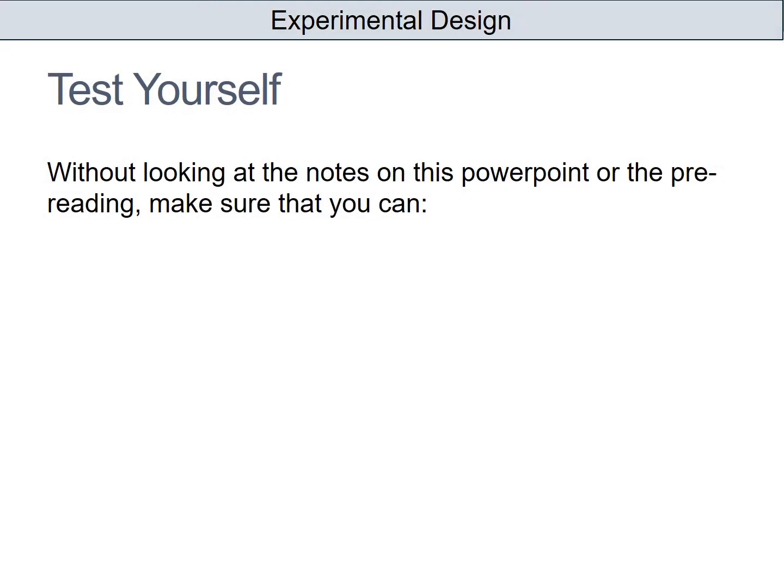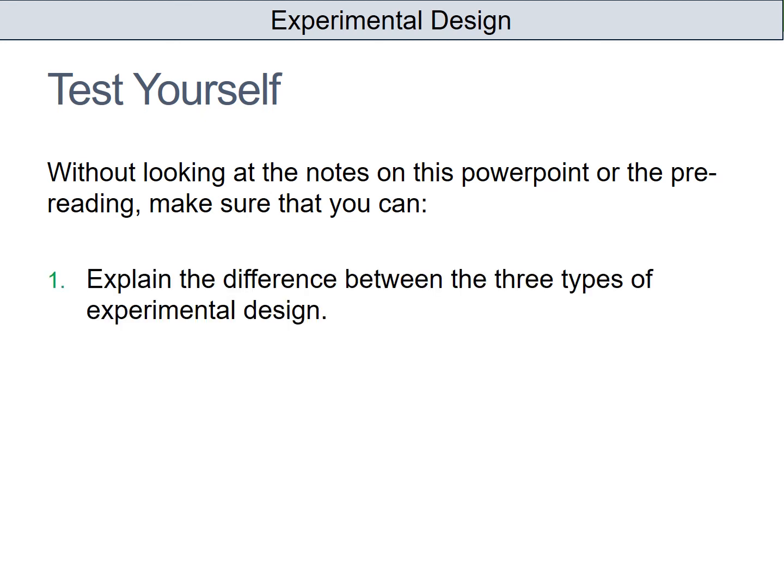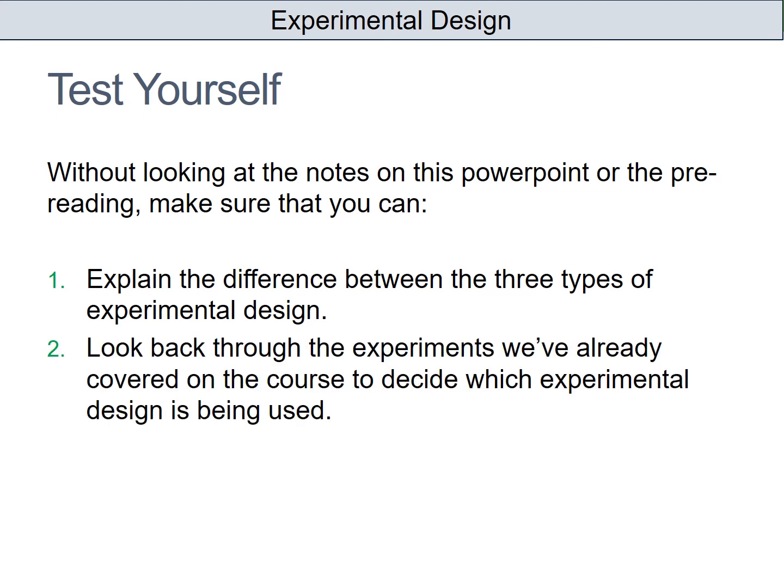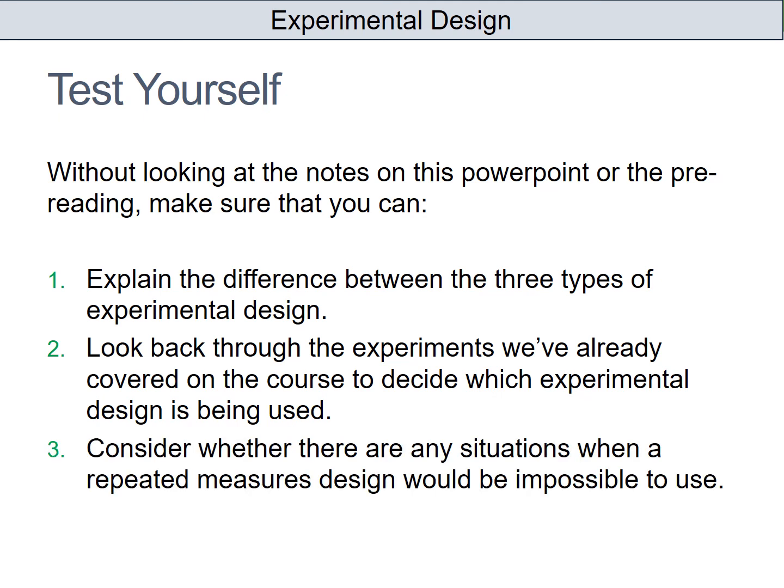Have a look at the pre-reading to get more information about experimental design, but before you come into the lesson make sure you can do the following: firstly, explain the difference between the three types of experimental design; secondly, look back through the experiments already covered — mostly in memory but some within the approaches — and decide whether they use independent groups, repeated measures, or matched pairs design; and thirdly, think of situations where a repeated measures design would be impossible to use.